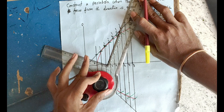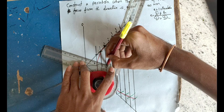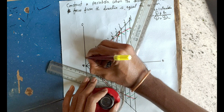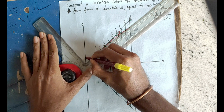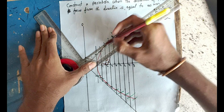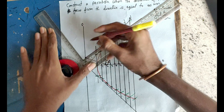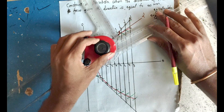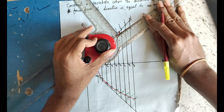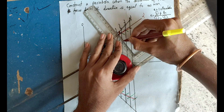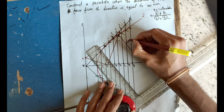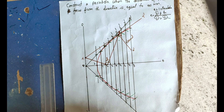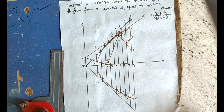Now we draw the normal and tangent to the parabola. Draw a line from the point P on the parabola perpendicular to the directrix — this means at 90 degrees to the directrix. Draw a line from P to join the focus. Then from point T-dash, draw the tangent line.